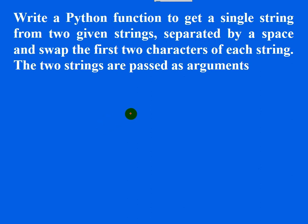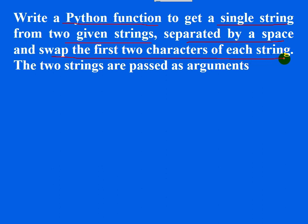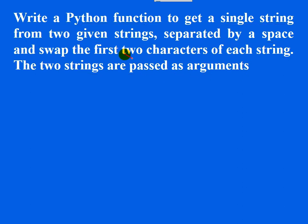A programming question based on strings: write a Python function to get a single string from two given strings, separated by a space, and swap the first two characters of each string. The two strings are passed as arguments. Let me explain this using an example.